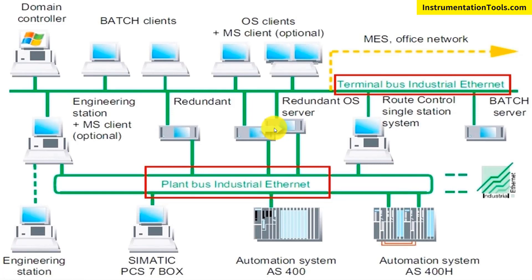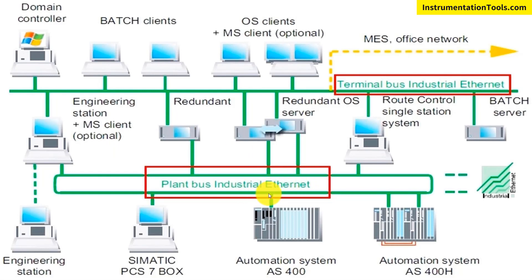As you can see in the industrial automation architecture, there are two bus planes. One is Plant Bus and the second is Terminal Bus. Plant Bus refers to when an automation system is connected to OS or ES servers — connecting OT technology to the server. This Plant Bus can be implemented in various topologies like Star, Bus, Ring, or Tree topologies for Plant Bus Industrial Ethernet.